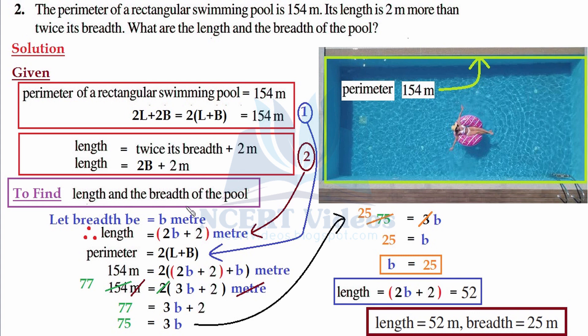that is represented with b, plus that is addition of 2 meters to it. Now you have to find length and breadth of the pool. So you assumed that breadth be b meters.